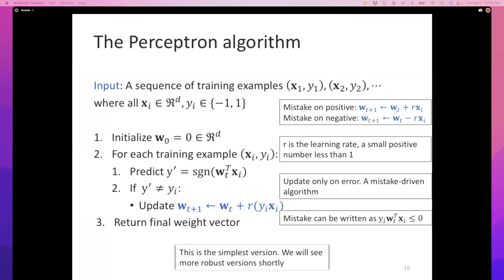The perceptron algorithm operates on inputs that you can assume are already given to you as feature vectors — we'll call them x1, x2, vectors in d dimensions. The yi's, y1, y2, are labels which can be minus one or one. So we have a binary classification problem. The way this operates is it internally keeps track of a set of weights that it keeps updating whenever there's a mistake. In the end, it learns a linear threshold unit, a linear classifier. A linear classifier takes one of these xi's and predicts a 1 if w transpose x is greater than or equal to 0.